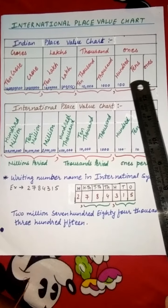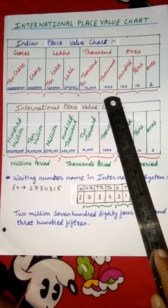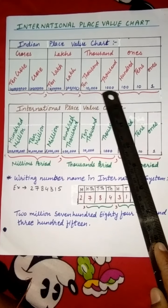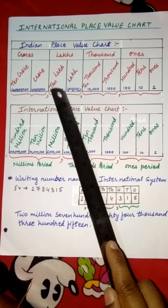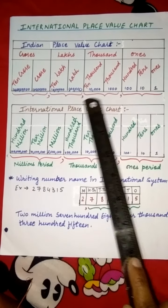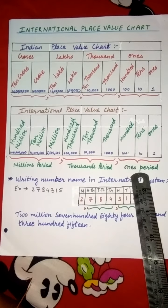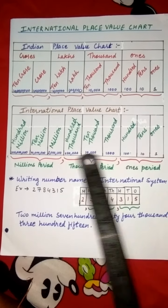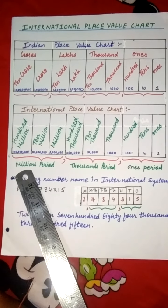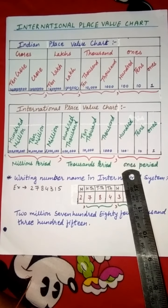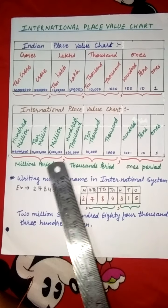And commas also differ. In the Indian place value system, we put commas after the 1's period — that is after the 100's place — then after the 10,000th place, and after the 10 lakh place. So the divisions are 3, 2, 2, and 2. But in the international place value system, we put commas after the 1's period — that is after 100 — then after the thousands period, that is 100,000, and then after the millions period. So in each period there are 3 numbers — a pair of 3, then a comma, pair of 3, then a comma.